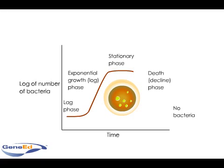The reproduction rate slows, and the total number of bacterial cells present stabilizes, as cells begin to die off or stop reproducing. This is thus termed the stationary phase.